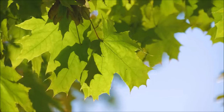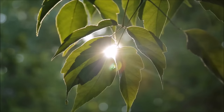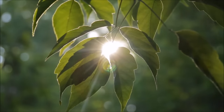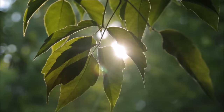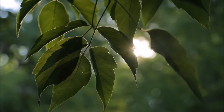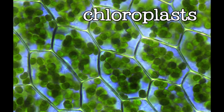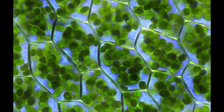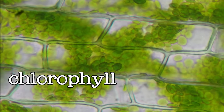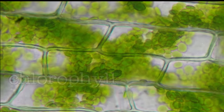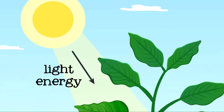Now that you know what photosynthesis is, let's take a closer look at how it works. First, the plant takes in sunlight. This process happens in the leaves and other green parts of plants, and it's all thanks to some special structures called chloroplasts. Chloroplasts contain a chemical called chlorophyll, which is what makes plants green. The chlorophyll is what absorbs the energy from the sunlight that the plant can use to do its work.